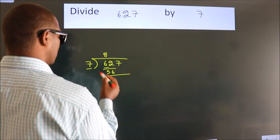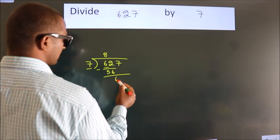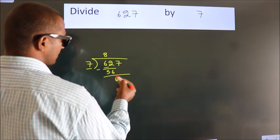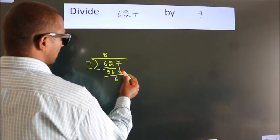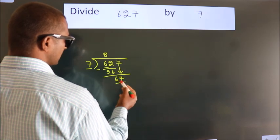Now we subtract and get 6. After this, bring down the number beside it, so 7 down, giving us 67.